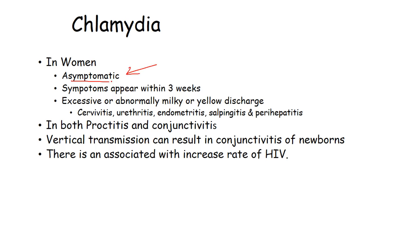In women, it is often asymptomatic. Almost all sexually transmitted diseases are 50 to 70 percent asymptomatic in women, making it very hard to determine if a woman has an STD. Symptoms appear within three weeks and include excessive or abnormal milky or yellow discharge. It may be associated with cervicitis, urethritis, endometritis, and perihepatitis.